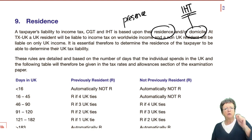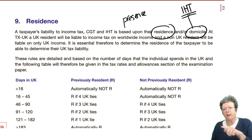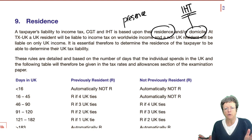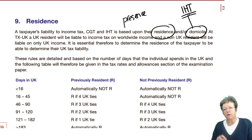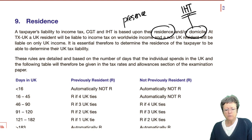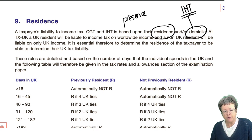If you are a UK resident, you'll pay income tax on your worldwide income — wherever it is in the world, you'll pay tax on it. If you're non-resident, you only pay UK income tax on your UK income. It is therefore essential to determine the residence.